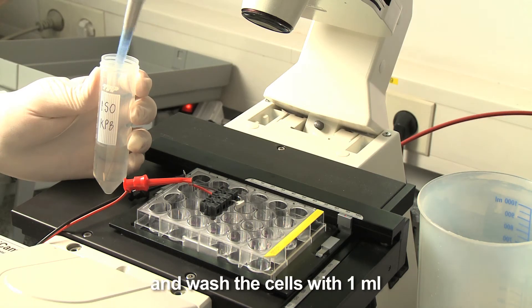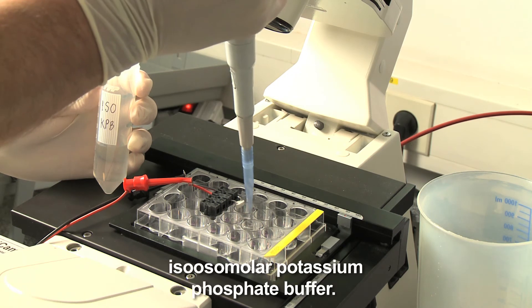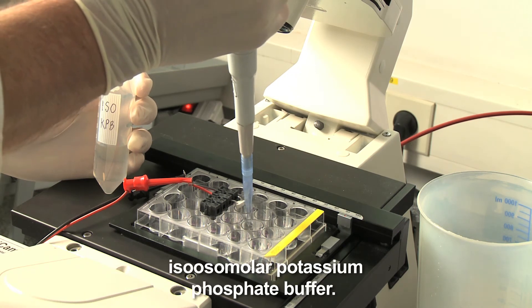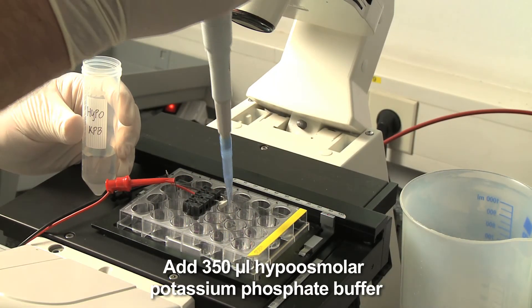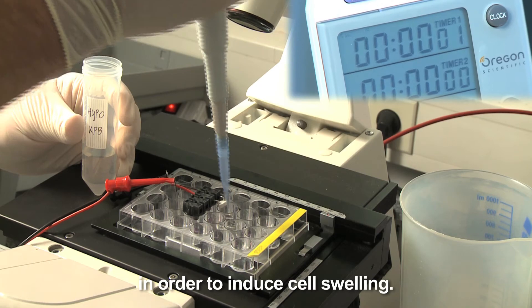Remove the culture medium and wash the cells with 1 ml isoosmolar potassium phosphate buffer. Add 350 microliters hypoosmolar potassium phosphate buffer in order to induce cell swelling.